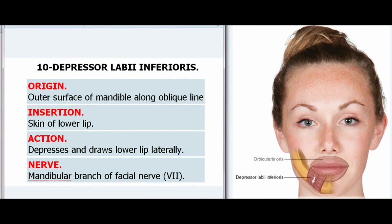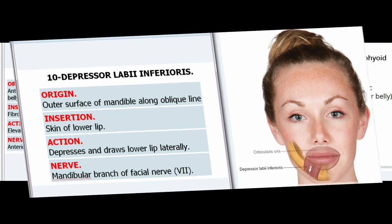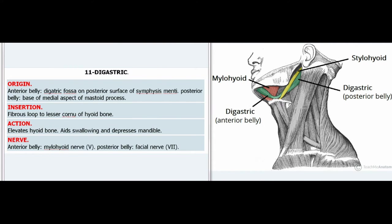10. Depressor Labii Inferioris. Origin: Outer surface of mandible along oblique line. Insertion: Skin of lower lip. Action: Depresses and draws lower lip laterally. Nerve: Mandibular branch of facial nerve (VII).